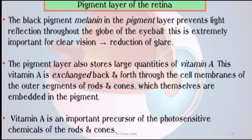In the pigmented layer of the retina, the black pigment melanin prevents light reflection throughout the globe of the eyeball, which is extremely important for clear vision as it reduces glare. The pigmented layer also secretes large quantities of vitamin A, which extends back and forth through the cell membrane of the outer segments of rods and cones.